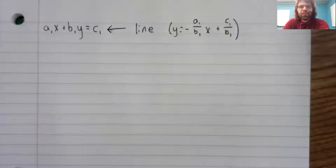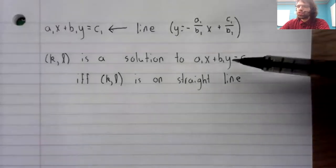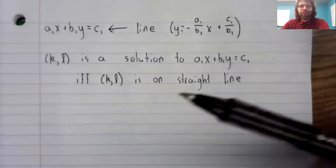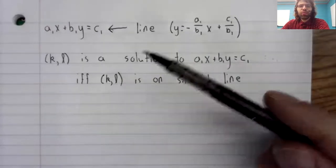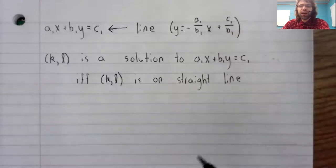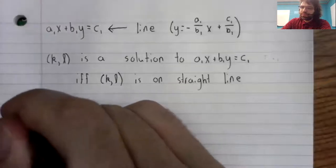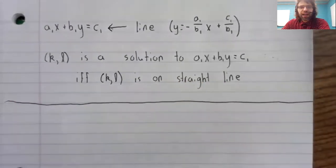I'm framing this observation in terms of solutions. A point (k, l) is a solution to a linear equation if and only if (k, l) is a point on this straight line. Something we learn in algebra.